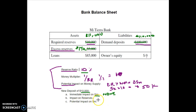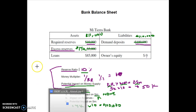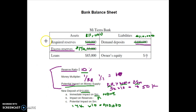What about the potential impact on the money supply after the deposit? We use the same approach: excess reserves times the money multiplier equals the change in money supply. Excess reserves are now $14,000 and the money multiplier is 10, so this will have a potential impact of $140,000 on the total money supply.